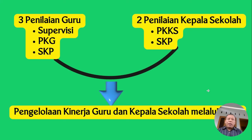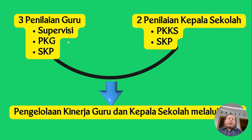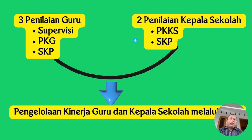Sebelumnya kita bahas apa yang sudah kita lakukan sebelum ini, yaitu tentang supervisi PKG dan SKP. Untuk kepala sekolah, PKKS dan SKP. Sebagai guru, kita pasti pernah disupervisi oleh kepala sekolah, juga pernah di-PKG atau penilaian kinerja guru, dan juga SKP bagi yang ASN. Kepala sekolah juga dalam hal penilaian ada dua macam, yaitu PKKS dan SKP. Untuk guru ada tiga kegiatan, untuk kepala sekolah dua kegiatan.